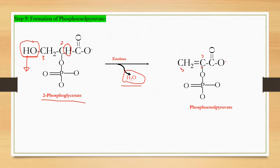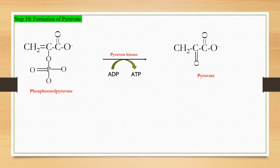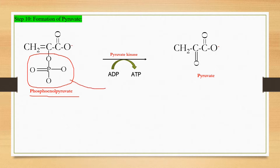The last step of glycolysis is known as formation of pyruvate. The phosphoenolpyruvate gives up its phosphoryl group, which attaches to ADP to form ATP. This reaction is made possible by the enzyme pyruvate kinase. The end product is now called pyruvate.